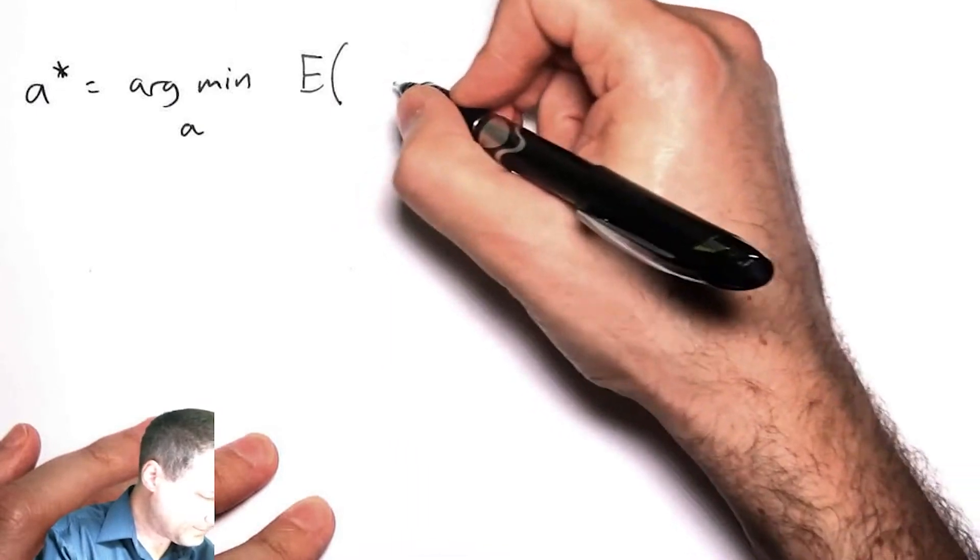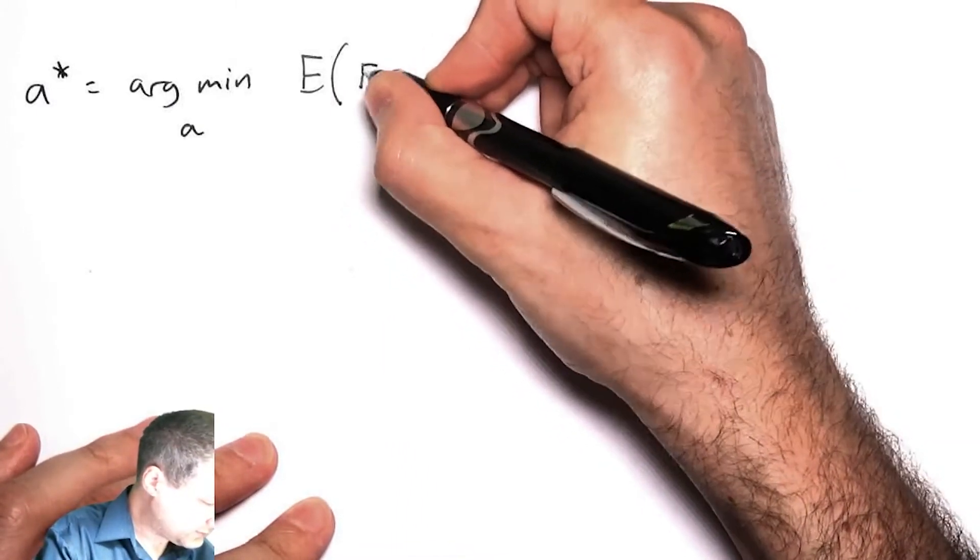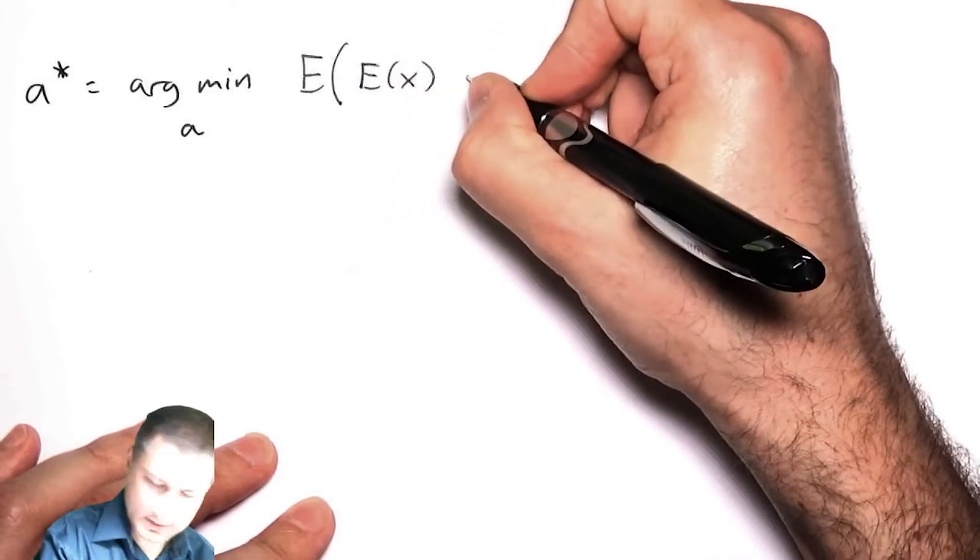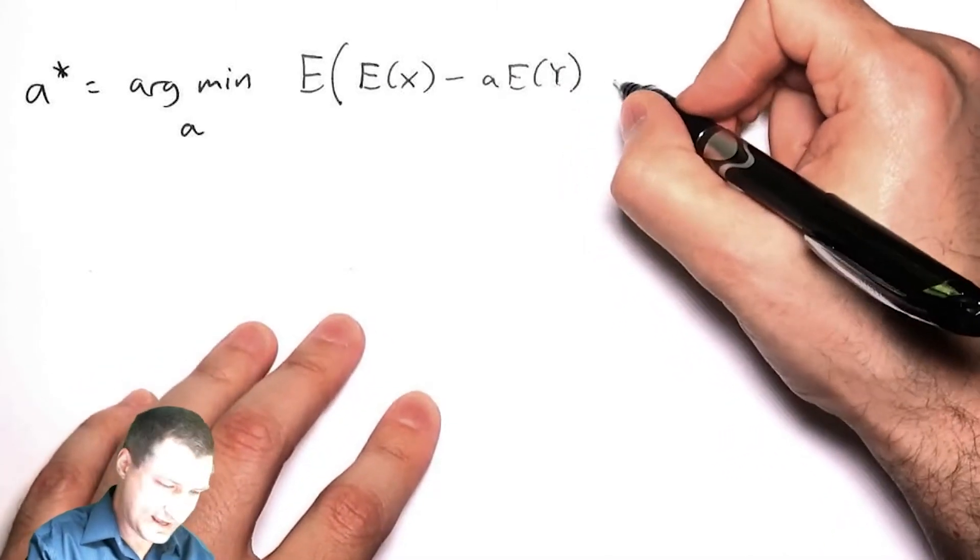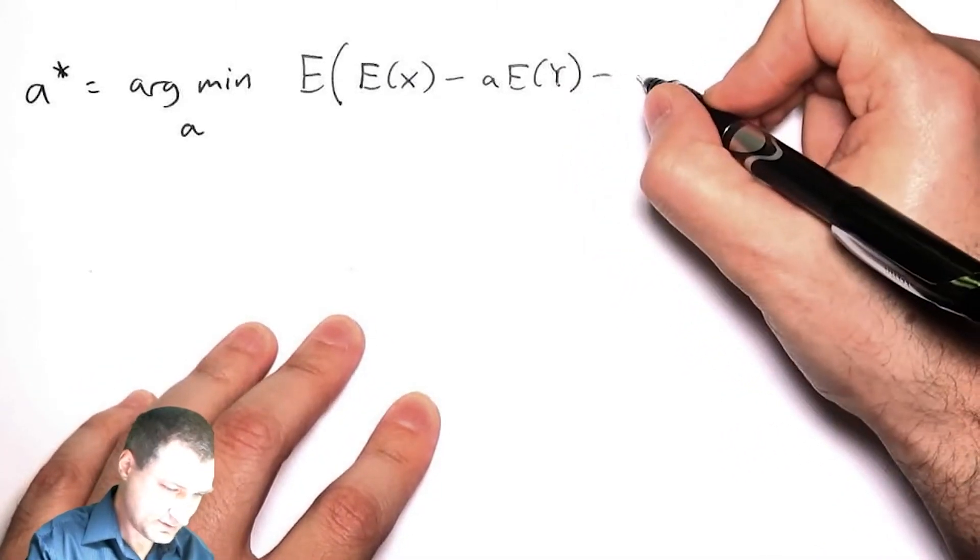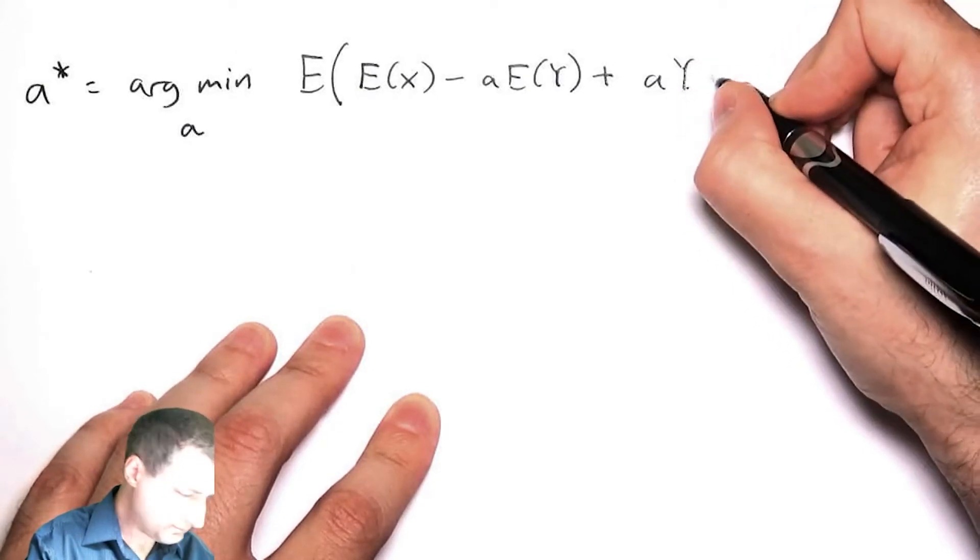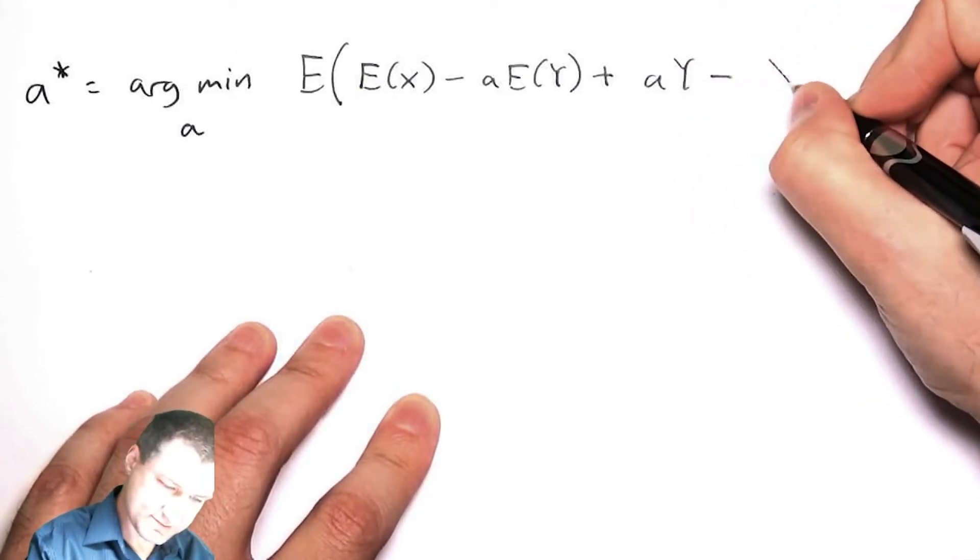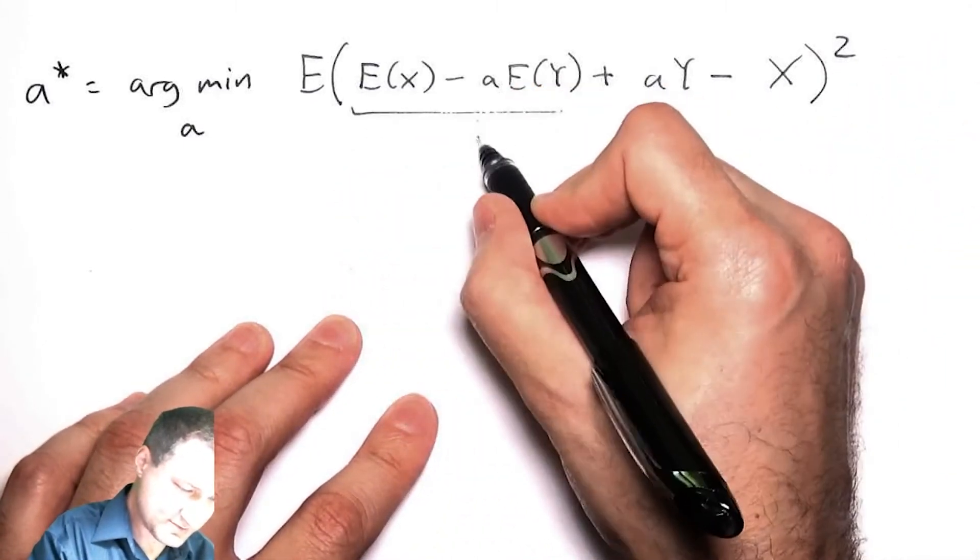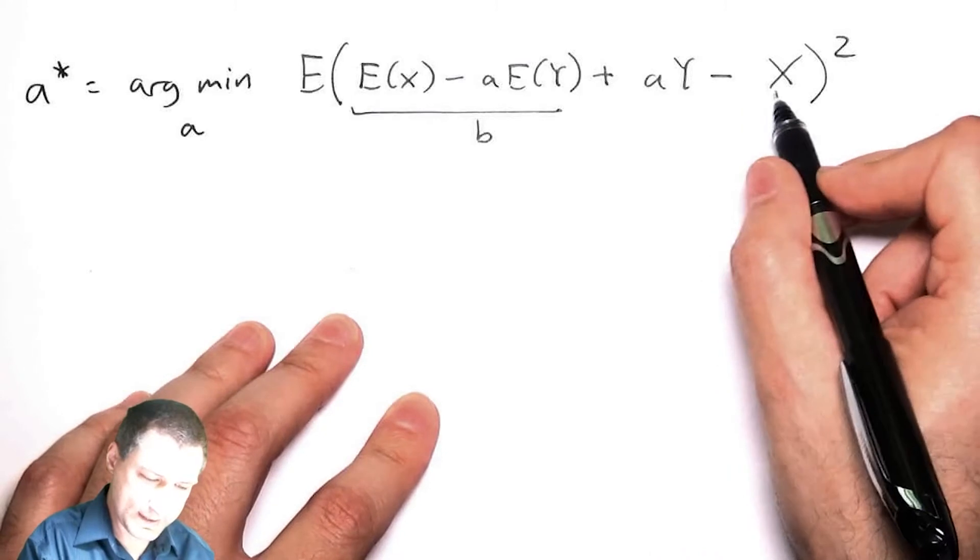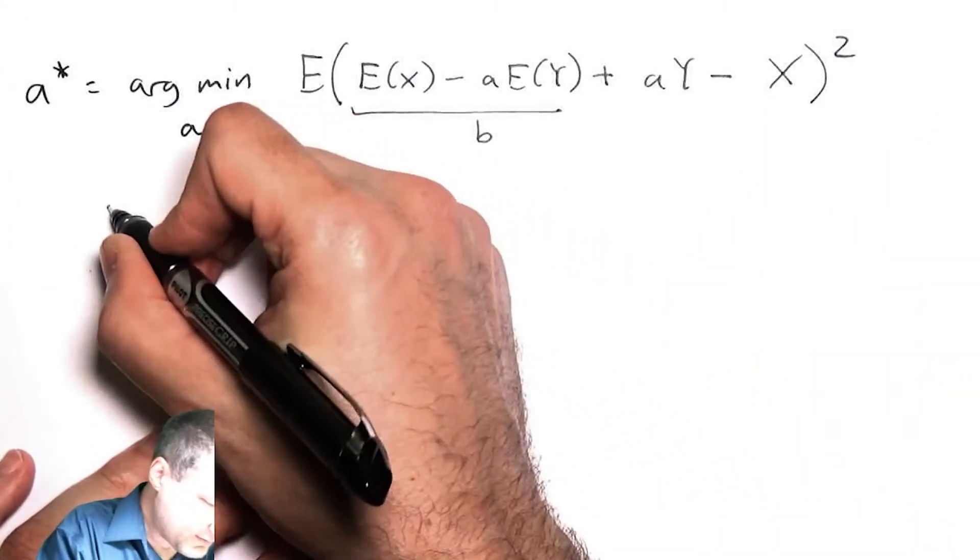So I have the expected value of E(X) - a·E(Y), that's my b, then I have plus aY minus X all squared. A little bit confusing - this is the b, so this is like b + aY and then I'm minus X-ing and I'm squaring that.